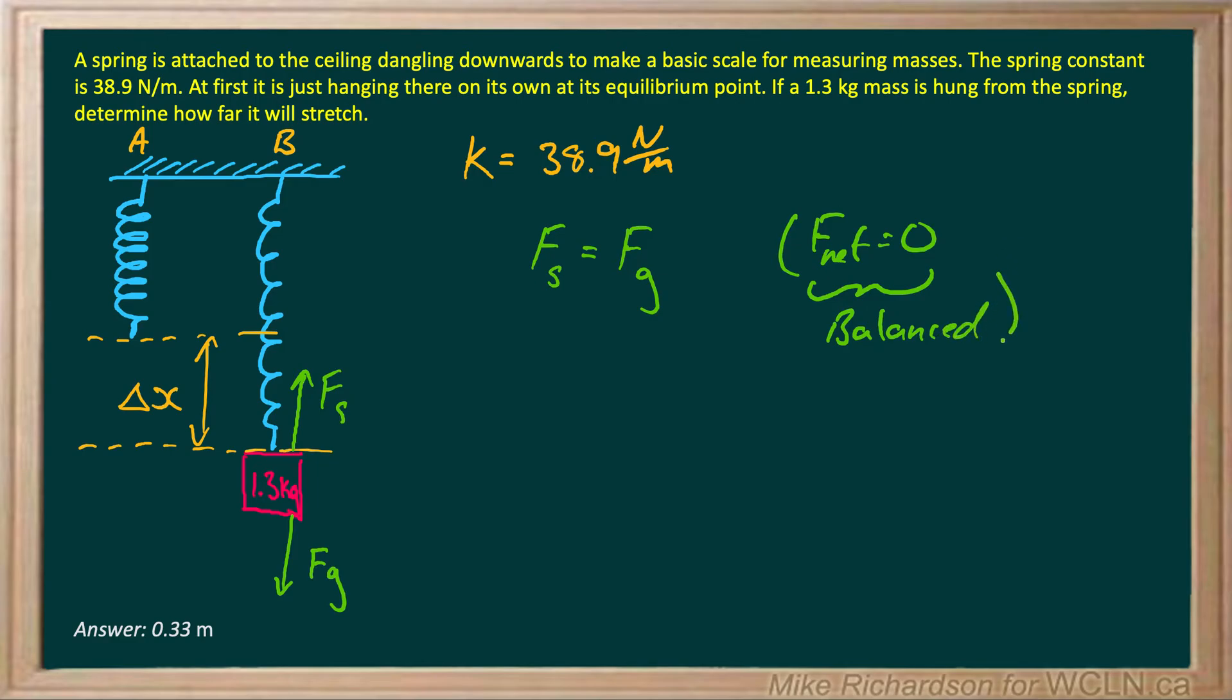Now we just plug in our equations. Hooke's law says our spring force can be calculated by multiplying the spring constant times the change in length. And we know force of gravity is just mass times 9.8.